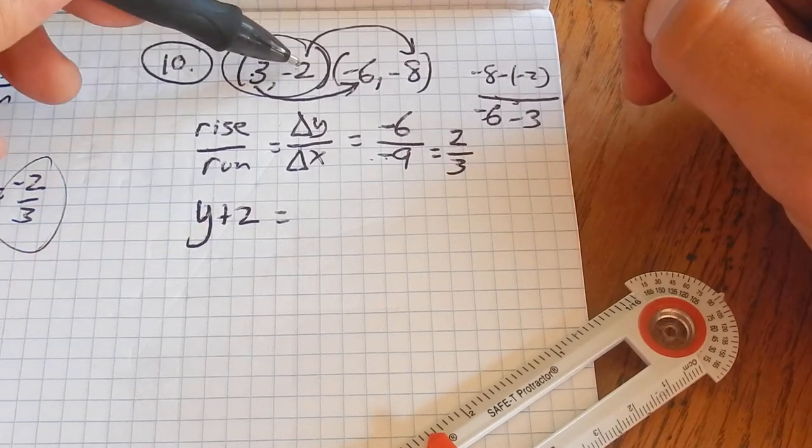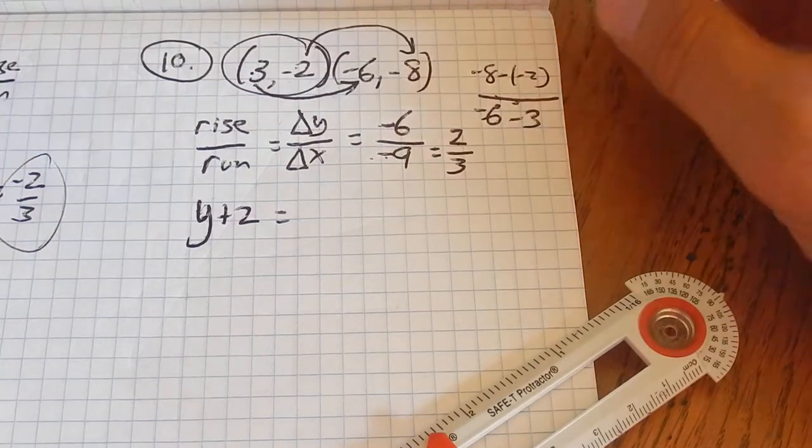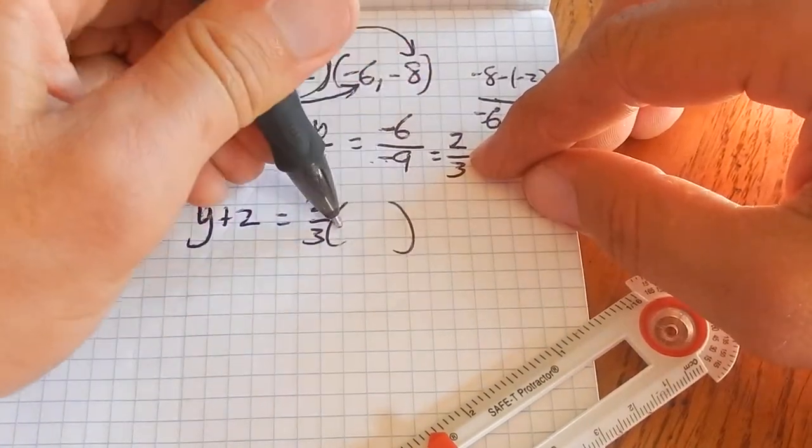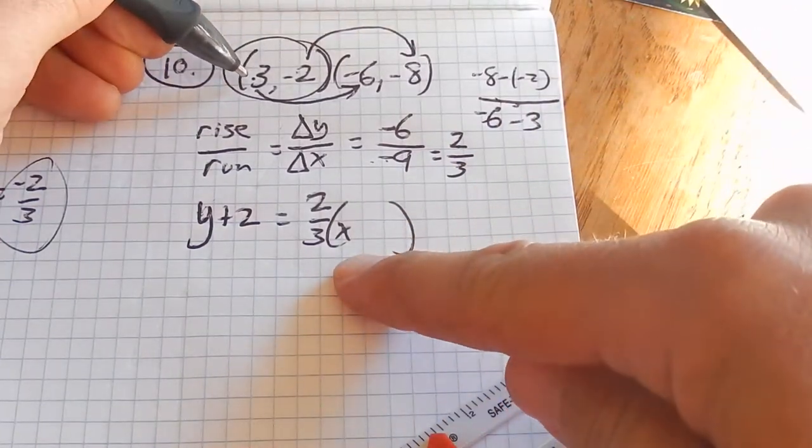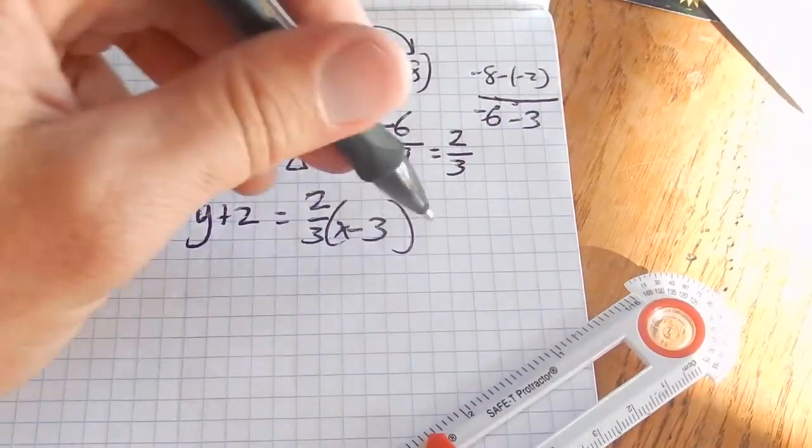I'm going to write plus 2, because when I plug in negative 2, I want it to be 0. Equals 2 thirds times x, not plus 3, minus 3. I could leave it like that.